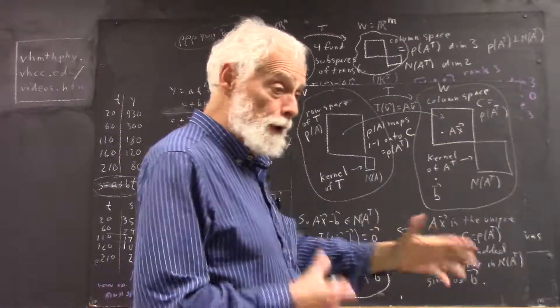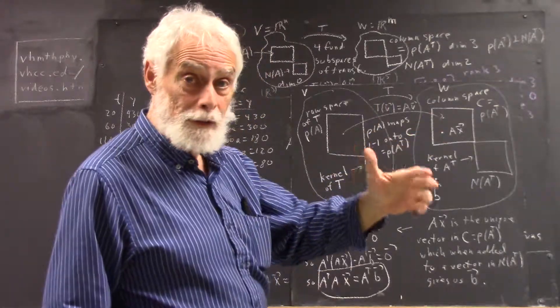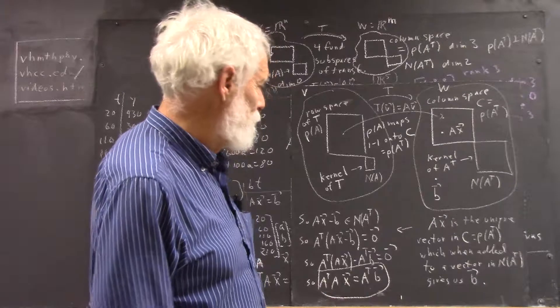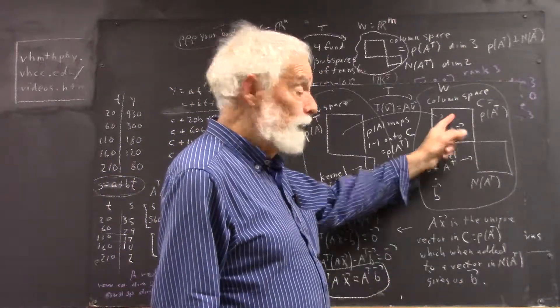And that's something that's no surprise. We've worked out examples where you find row space and null space. And what did I call this? I think I'm calling this the wrong thing.